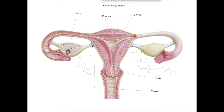Then we have the ovarian ligament, which is this here. It connects the ovary to the uterus, so it has an important structural role in that respect.